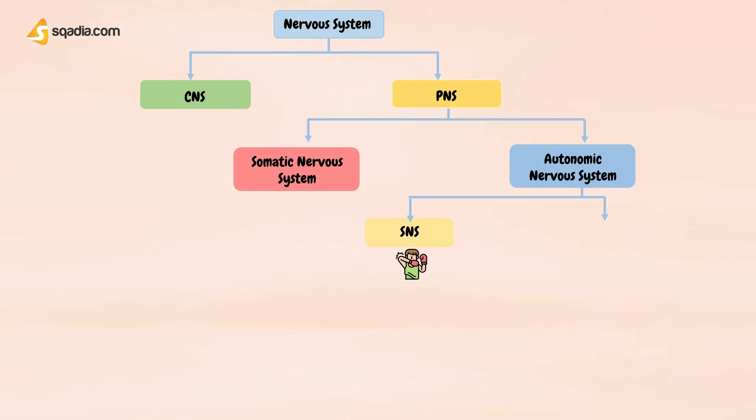Sympathetic nervous system is more active during fight, flight, and fright. You can remember it as triple F: F for fight, F for flight, and F for fright.